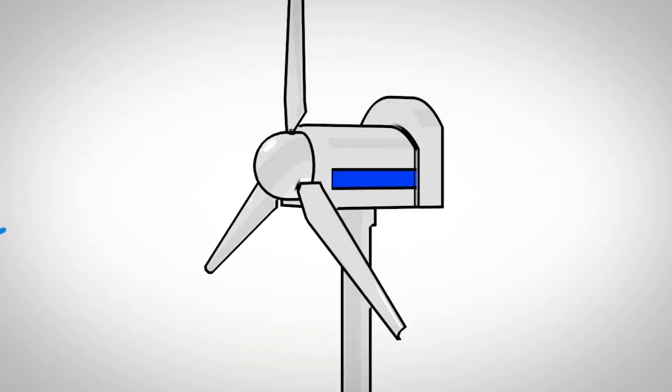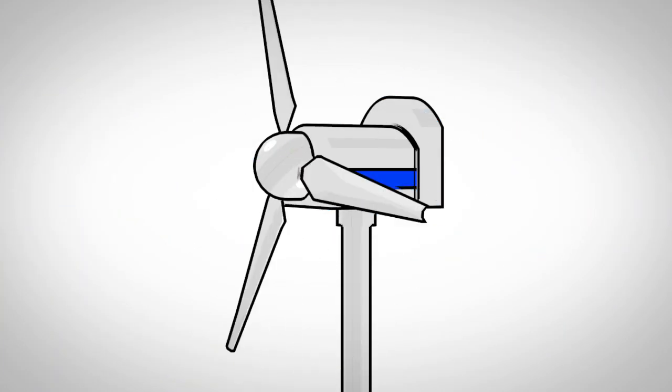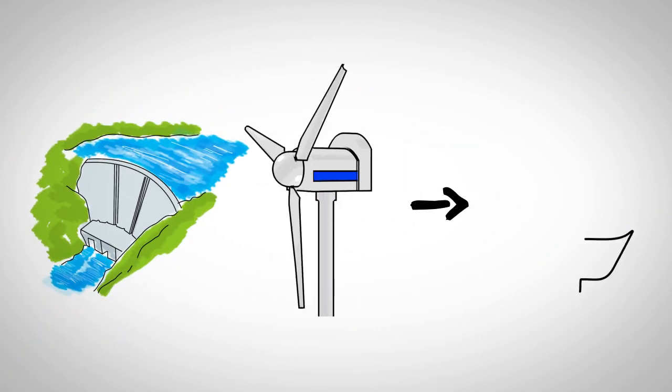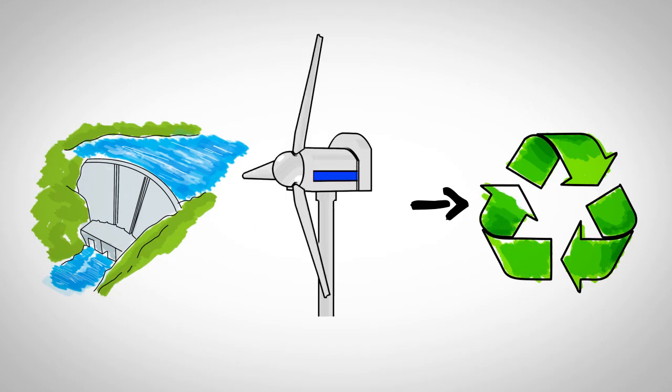We can also move the turbine using wind power. Energy produced this way is clean and renewable, as water and wind don't run out or get polluted in the process.